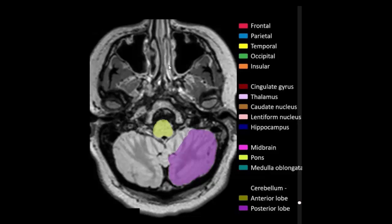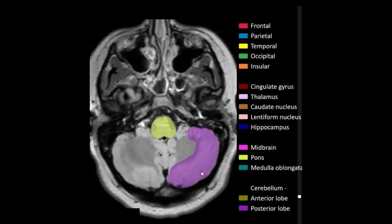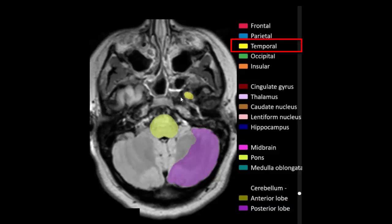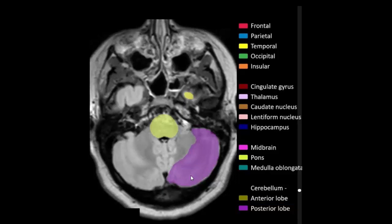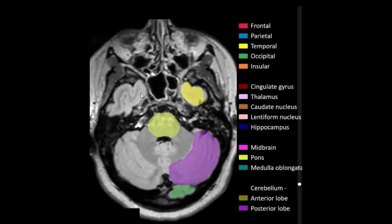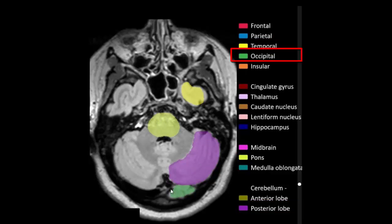Right and left temporalis muscle, right and left lateral pterygoid muscle. Right and left temporal lobe, right and left posterior lobe of cerebellum. Occipital lobe.